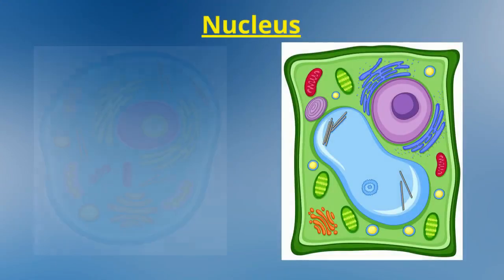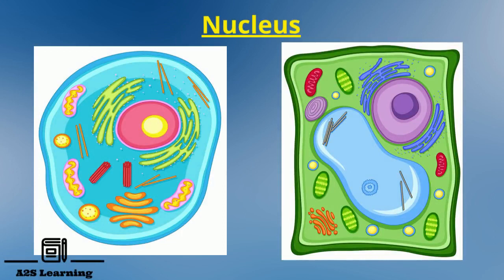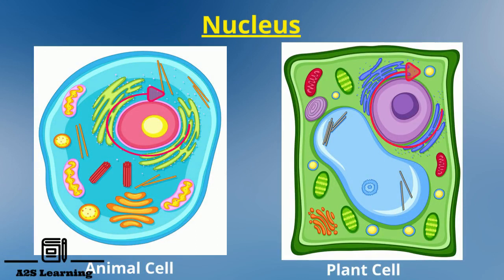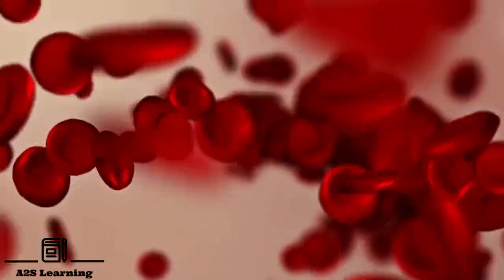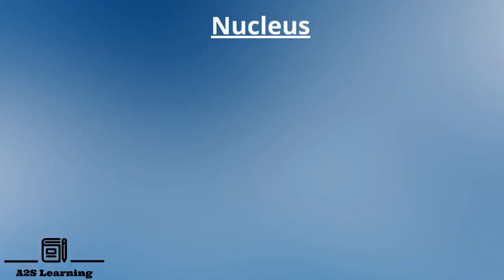Nucleus: It is a dense spherical living body located near the center of the cell in animal cells and is located towards the periphery in plant cells. All cells contain nucleus except human red blood cells which do not have nucleus.